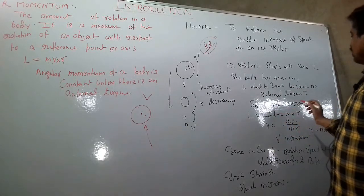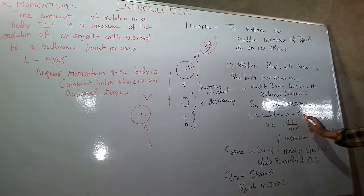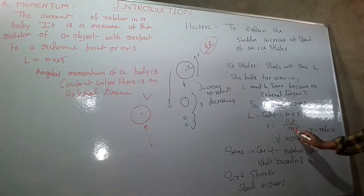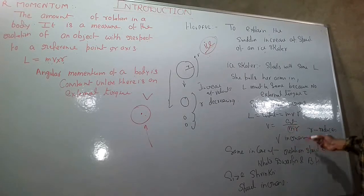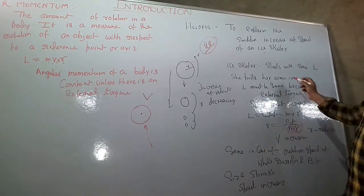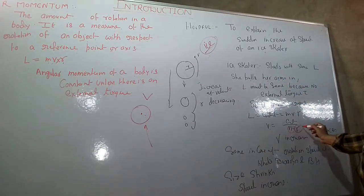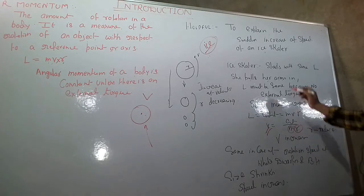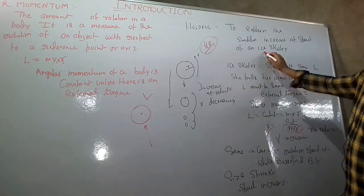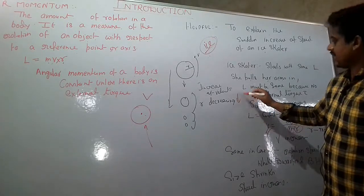Since L is constant and L equals m times v times r, we get v equals a constant divided by m times r. Here m is constant, so when the skater pulls her arms in, r reduces, which means v has to increase. That is why the rotating velocity of an ice skater increases when she pulls her arms in.